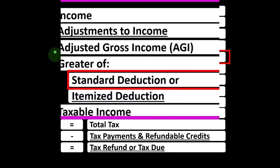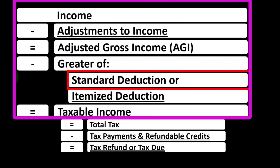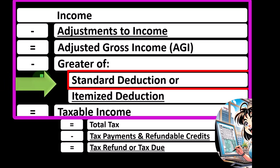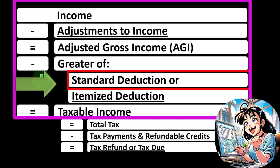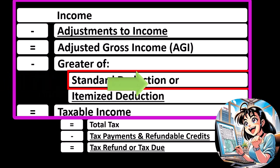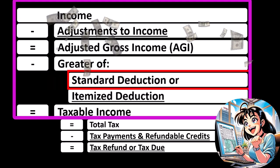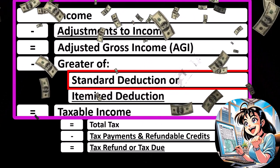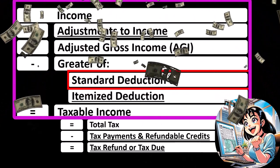We're looking at the standard deduction, envisioning the income tax formula where we're going to be taking the line item of either the greater of the standard deduction or itemized deduction. The first half of the income tax formula is in essence a funny income statement, because we have an income statement having income or revenue minus expenses.